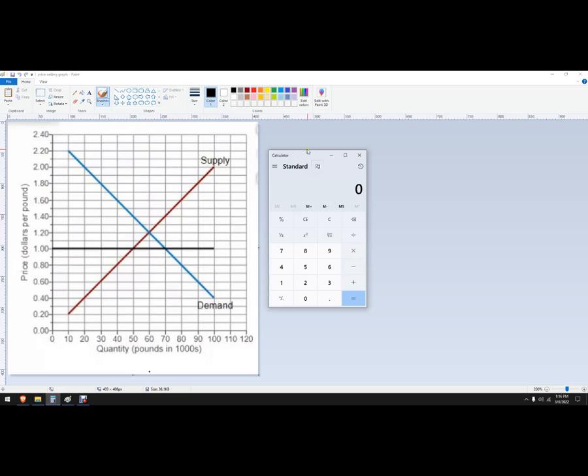The term is binding or effective. If a government wants to set an effective or binding price ceiling, it needs to be set below equilibrium. In this market here, equilibrium is $1.20.